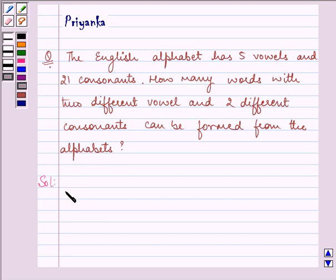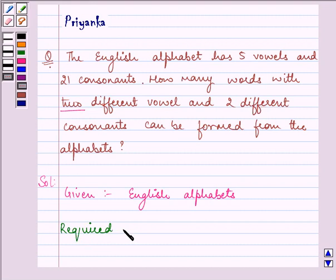Now here we are given English alphabets. We have to select 2 vowels from 5 vowels. The required number of ways of selection of 2 vowels is 5C2.